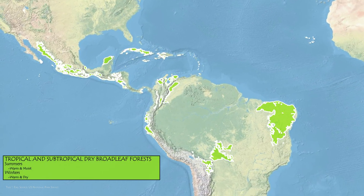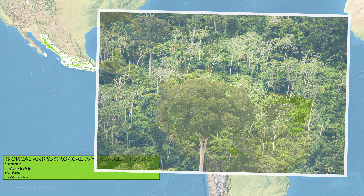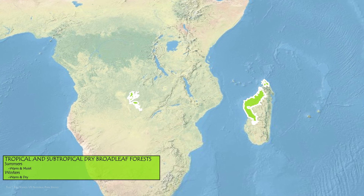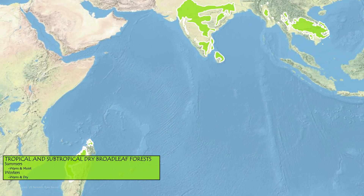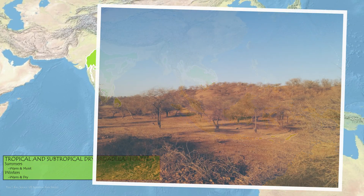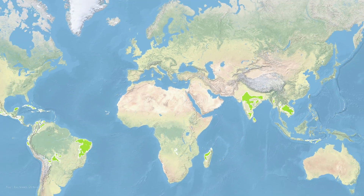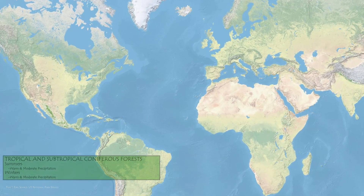In contrast, the tropical dry broadleaf forests are not quite as stable. They have consistent heat, but the precipitation varies a lot, having a monsoon-type climate. They will receive 4 months of heavy rain — 6 to 12 inches a month — followed by up to 8 months of drought. They occur in eastern South America, the western coast of Madagascar, and are very common in India. These forests are not as widespread as the Amazon-like tropical broadleaf.